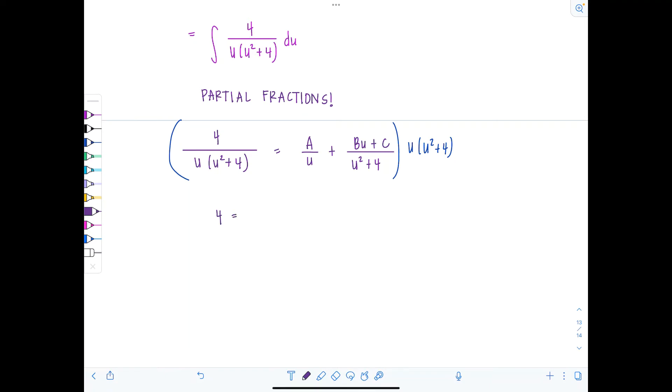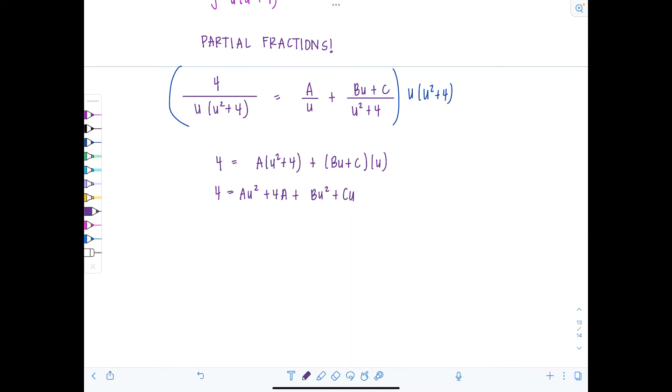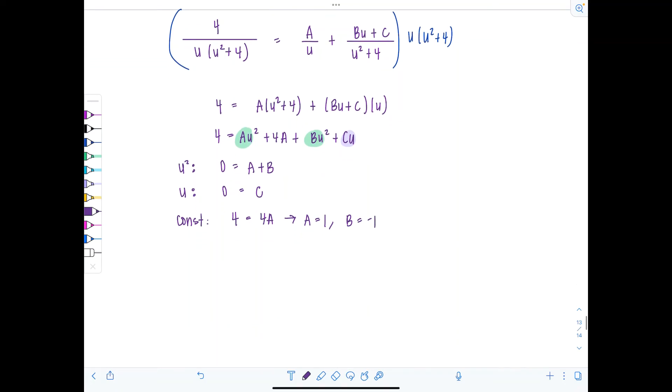4 equals a times u squared plus 4 plus bu plus c times u. So now I have 4 equals au squared plus 4a plus bu squared plus cu. And then we're just going to collect coefficients for like terms. So there's no squared terms on the left. So 0 must equal a plus b. And then are there linear terms? u to the first? None on the left. So c must be 0. And then constant term. All that's left is 4 equals 4a. So that means a is equal to 1 and b is equal to negative 1.